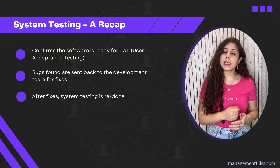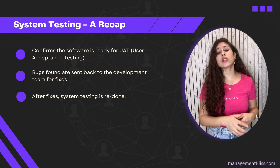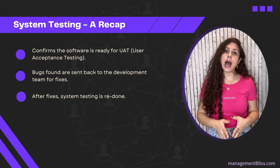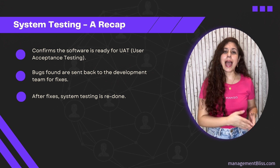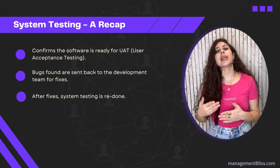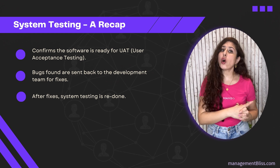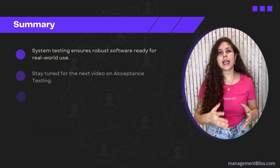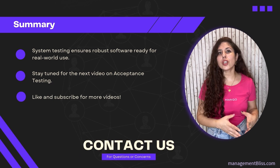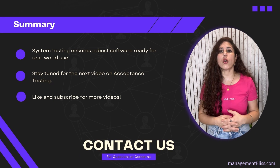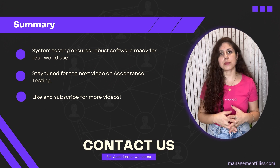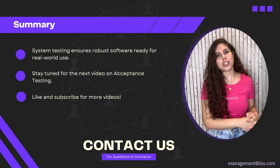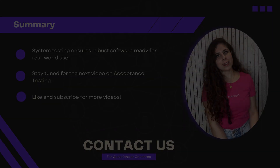If we find any bug in system testing, it goes back to the development team. They will fix it, and after their unit testing and integration testing, they will give it back to QA for another round of system testing. That's all for this video. In the next video, we will cover the fourth level of software testing, that is acceptance testing. Don't forget to like and subscribe for more videos like this.